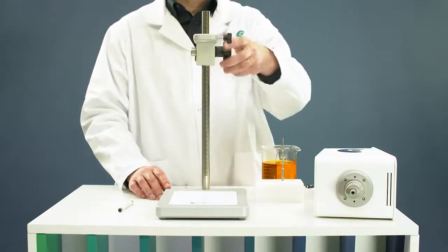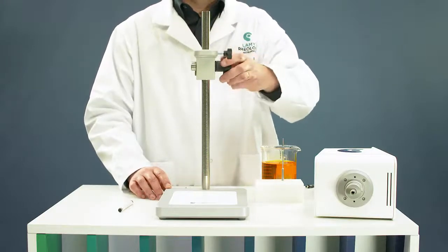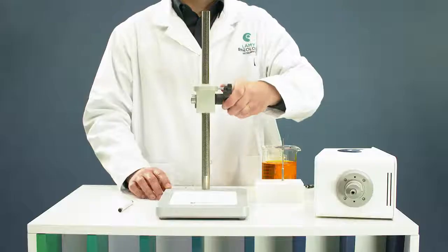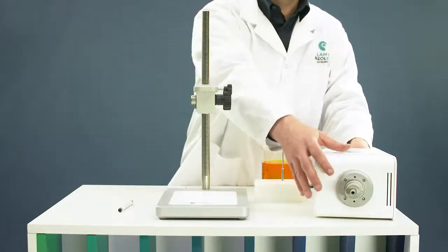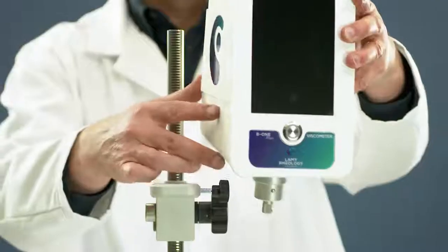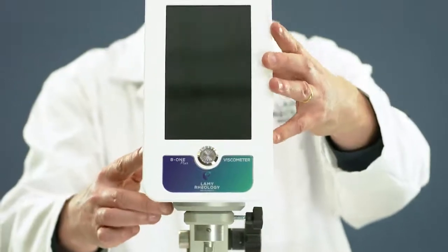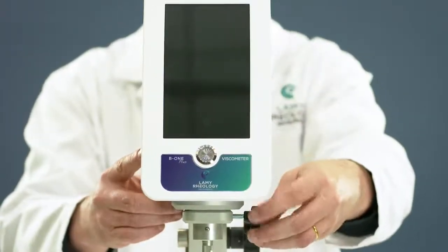Move down the rack stand. Take the measuring head and install it on the arm. Lock the measuring head with the screw.